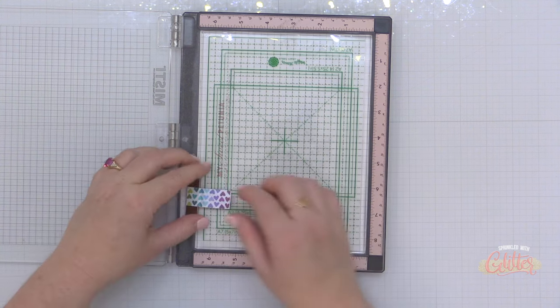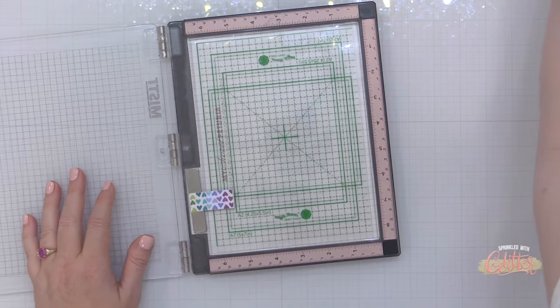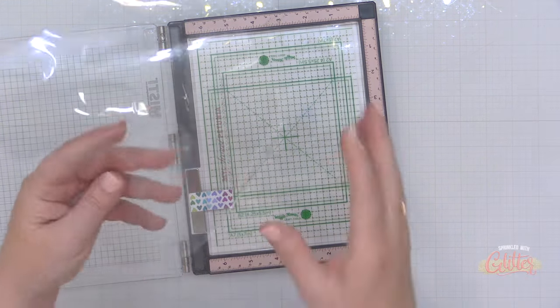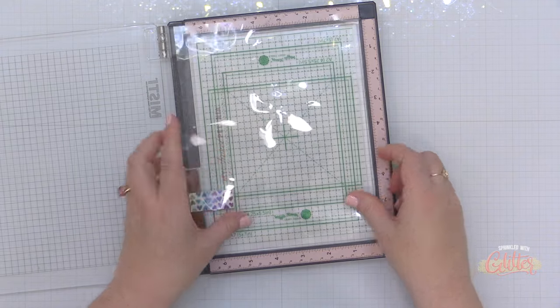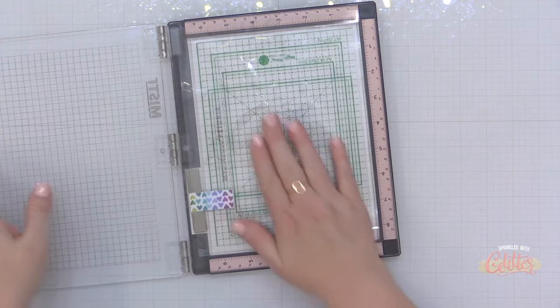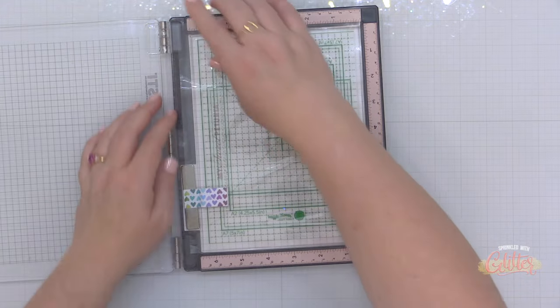Now the grip mat will hold your paper pretty securely in place but if you find you need backup your Misti magnet does still work through the Waffle Flower grip mat and if you choose you can store it with one of the protective sheets in place. I generally just close the lid of my Misti and place it in a drawer and that keeps it pretty well secured.